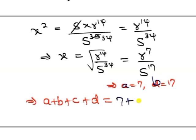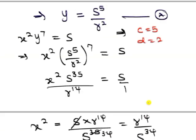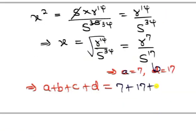we have a is 7, b is 17, and c is 5, while d is 2. So we have 5 plus 2, and if you sum the whole of this, you will get 31. And that's the solution to this problem.